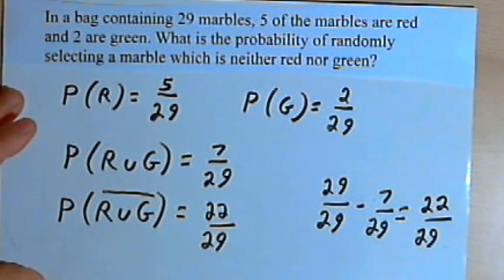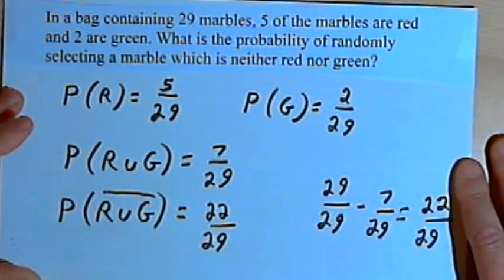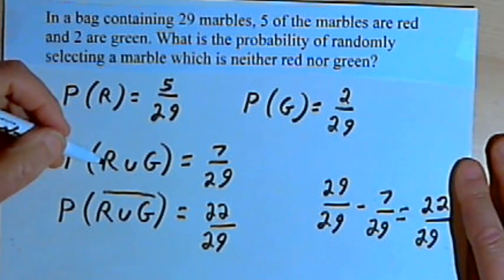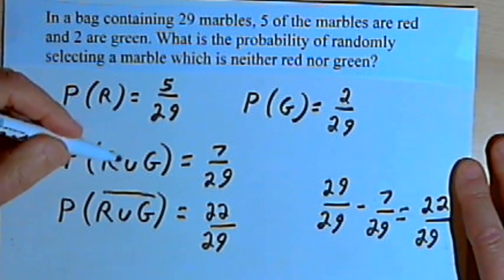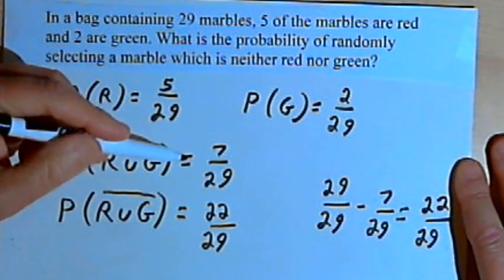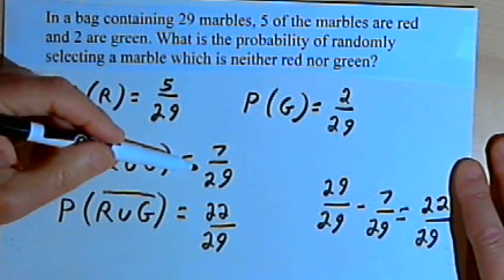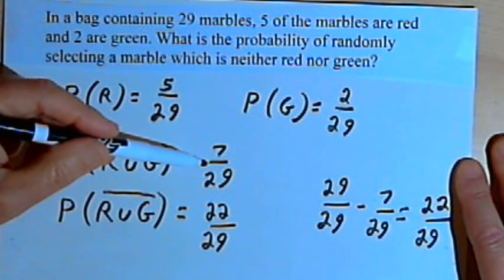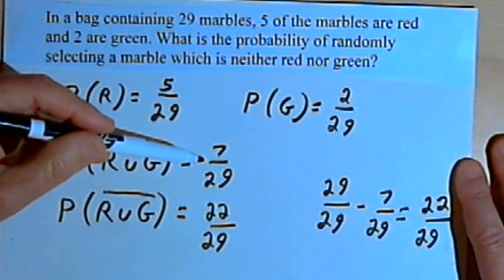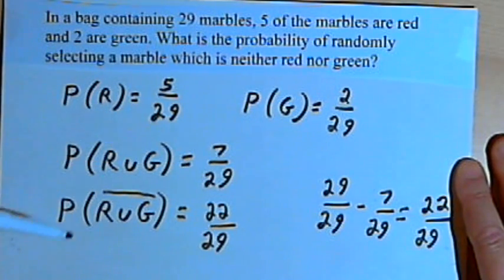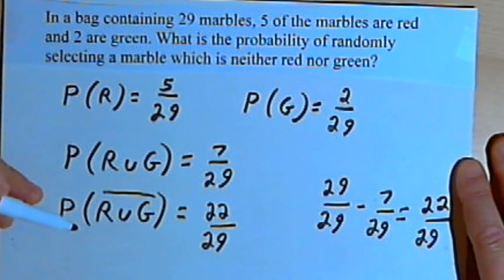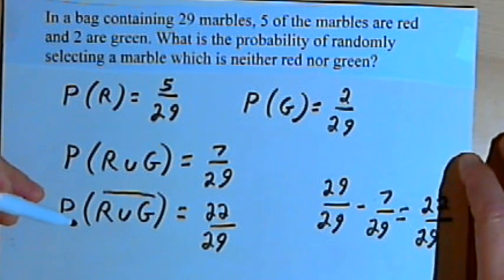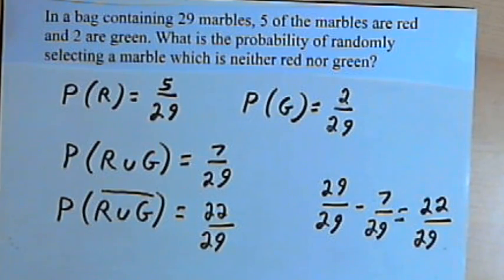The basic principle for all these examples is this: take the probability of something happening that you know, and subtract it from 1 if it's a decimal or fraction, or from 100% if you're dealing with a percent. That gives you the probability of the event not happening — the probability of the complement of the event. And that's all there is to it.